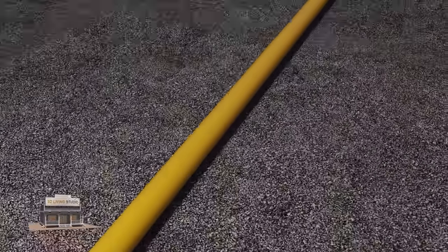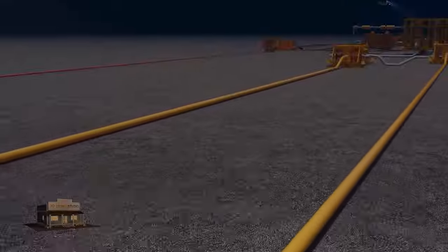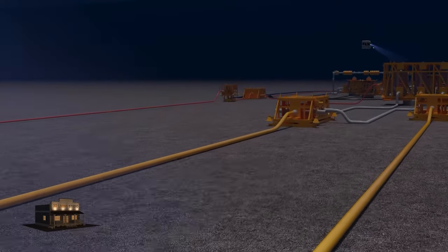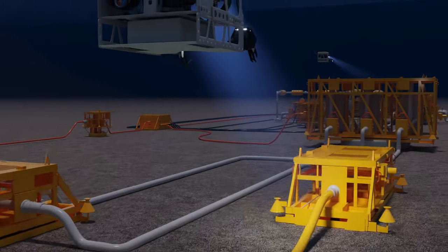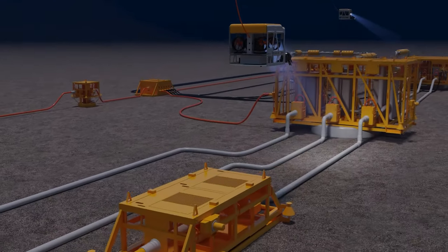A subsea pipeline, also known as offshore pipeline, is a length of pipe that is laid on or below the seabed. It is used to transport oil or gas across long distances.